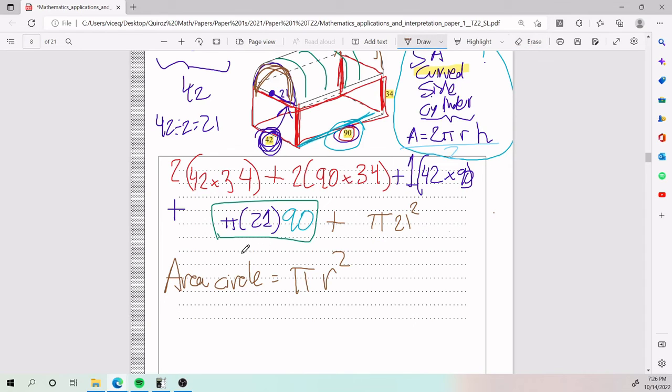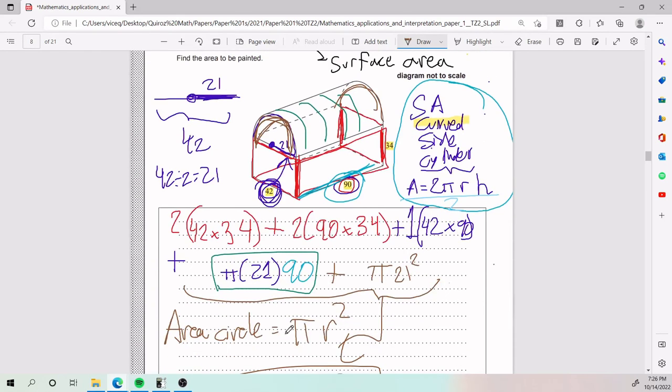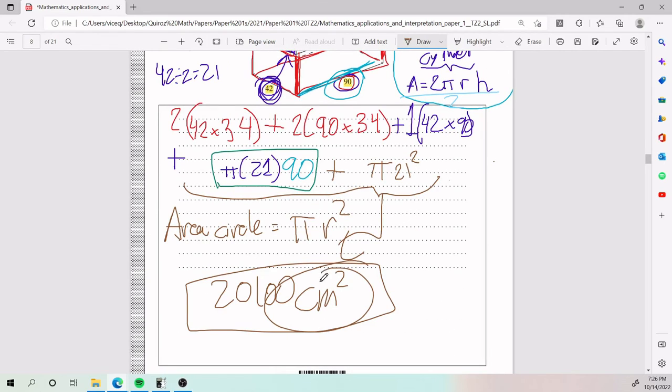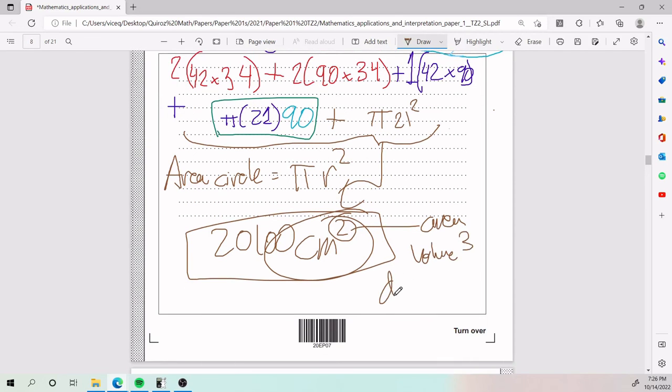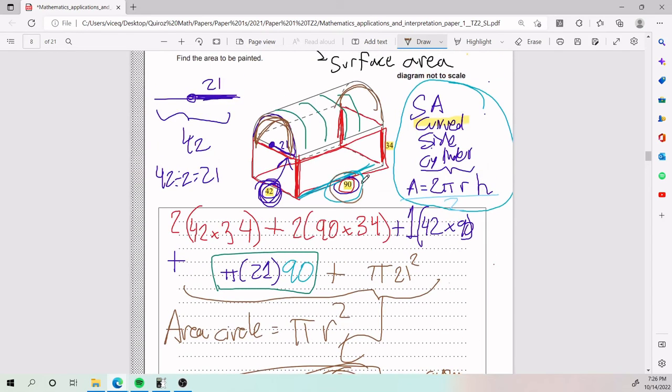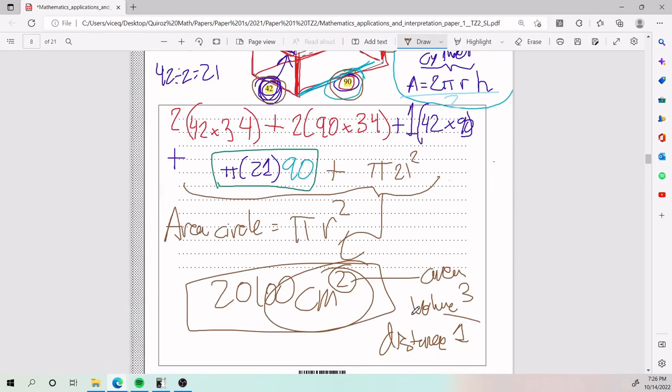Anyways, you plug all of this into your calculator and you end up with the value of 20,100 centimeters squared. Ladies and gentlemen, that is how you do number 3. Don't forget the units. This is squared because we're talking about area. If it were volume, it would be cubed. And if it's distance, it is to the power of 1. Just like these guys here, they are all to the power of 1. We don't write it down because it's not necessary. That is number 3.